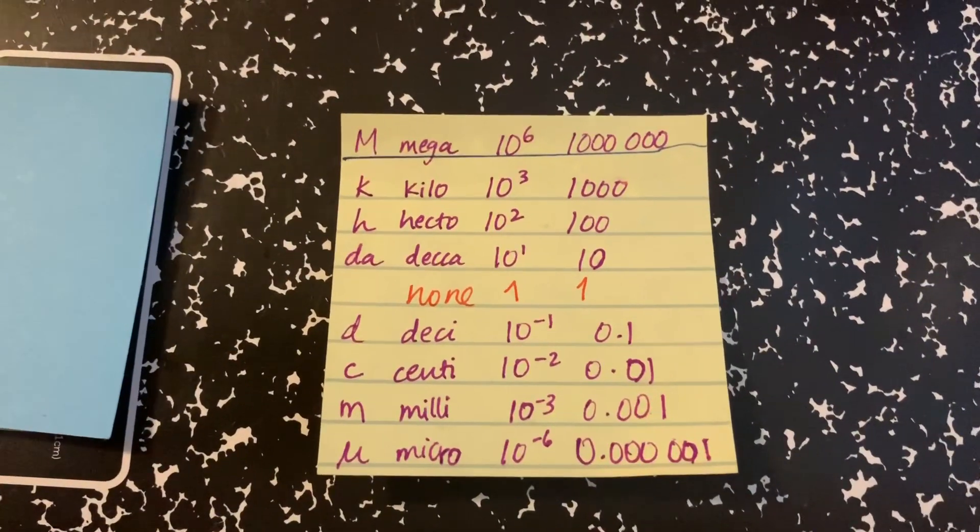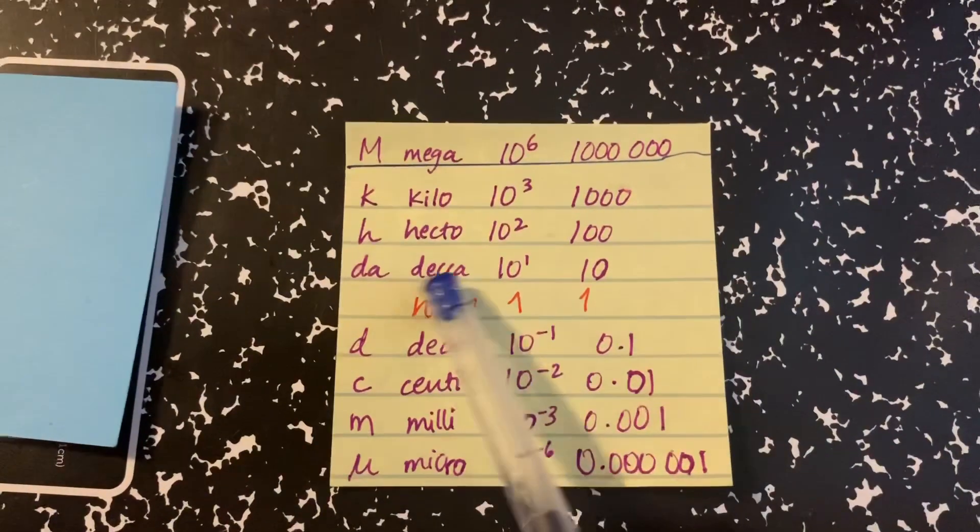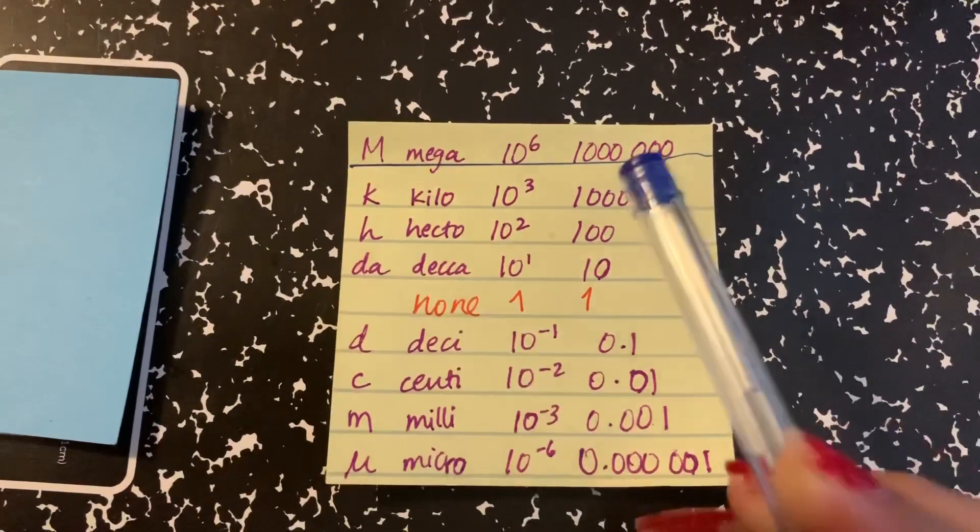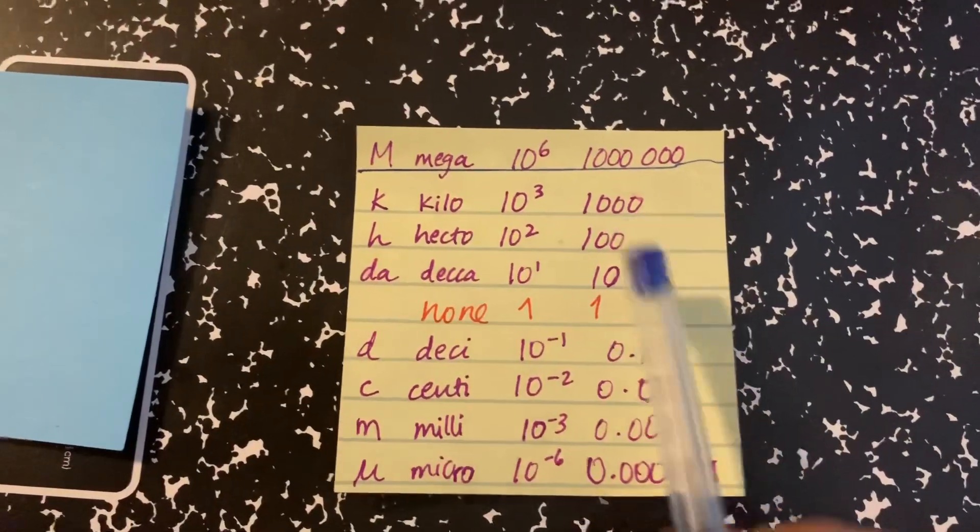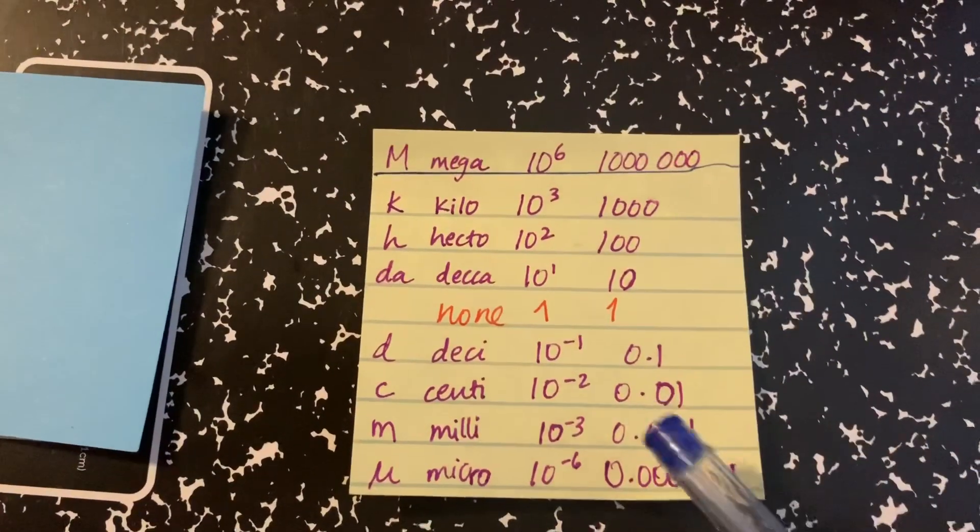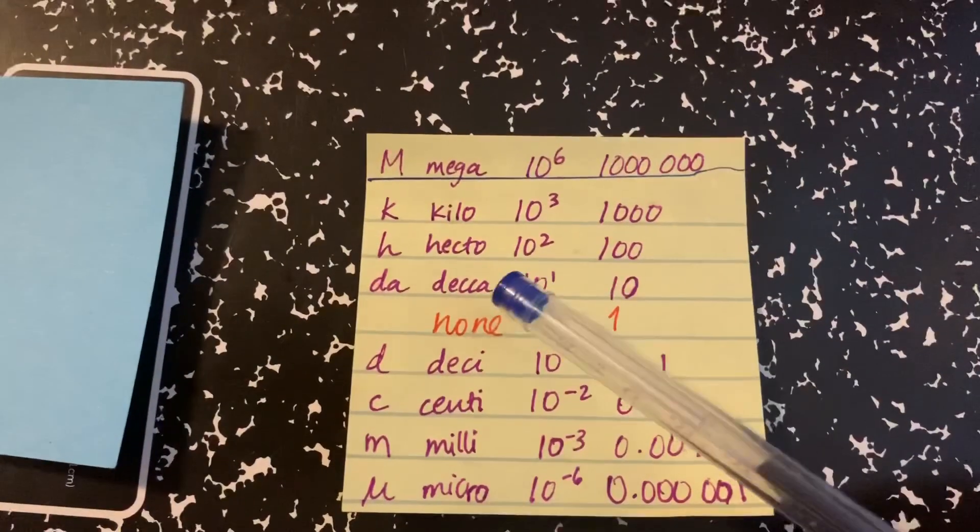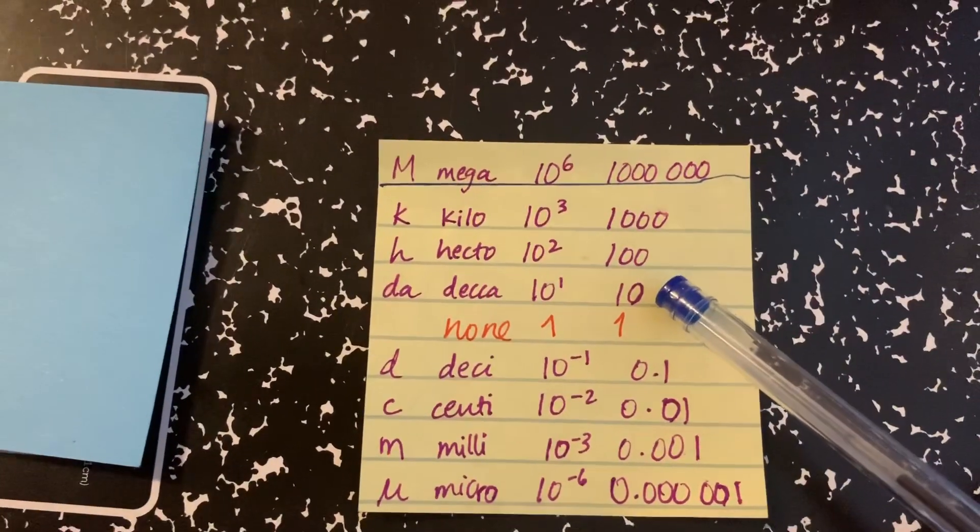So basically, these are like the keywords. If you find the keyword, for example DECA, that means it's 10 times bigger. If you start from here, this would get higher and higher, bigger and bigger. This would get lower. So if you have the keyword DECA, it means 10 times bigger.